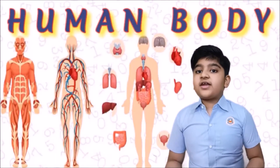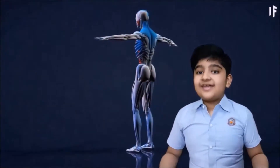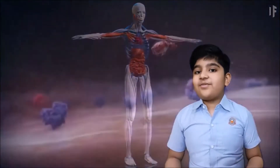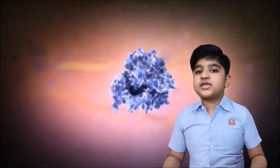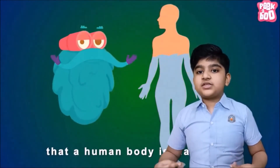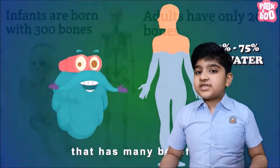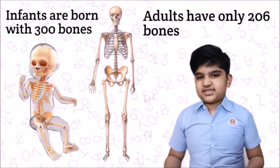Human body. Even our human body is all about maths. Let's look at some interesting mathematical facts about our human body. Every second, our body produces 25 million new cells. Our brain uses 20% of our oxygen. About 60% of our body is made up of water. Infants are born with 300 bones, but adults only have 206 bones.